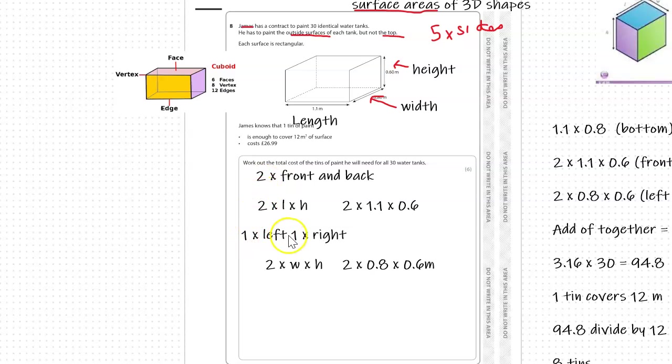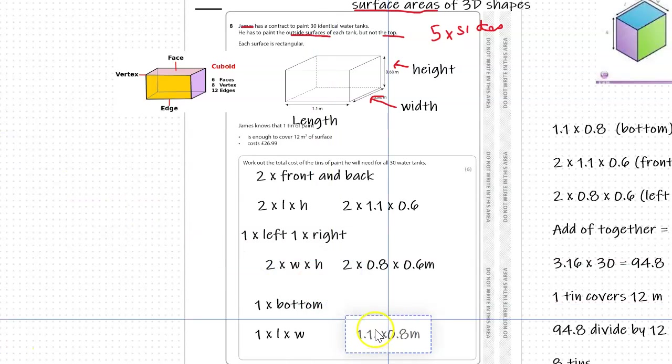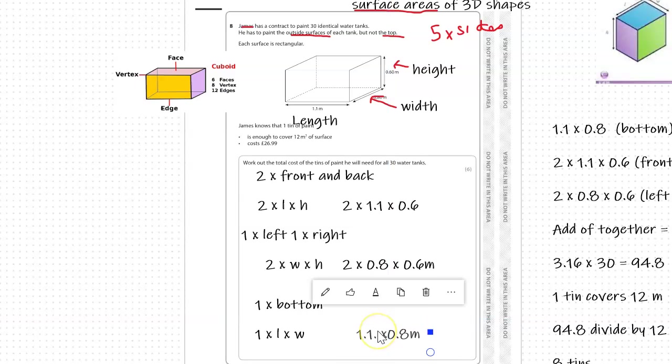We've got one, two, three, four sides. One more side, which is the bottom, not the top. We've got one times bottom, and that is length and width. The measurement associated with that is 1.1 times 0.8 meters.